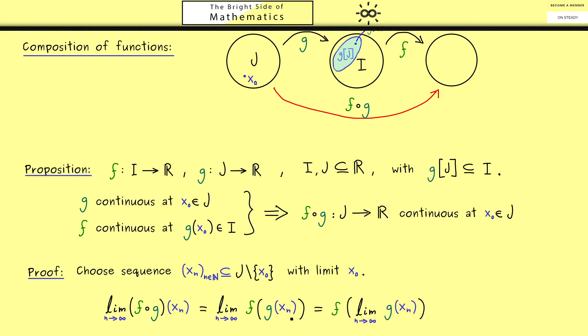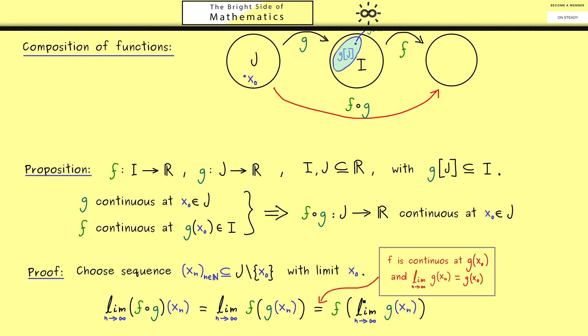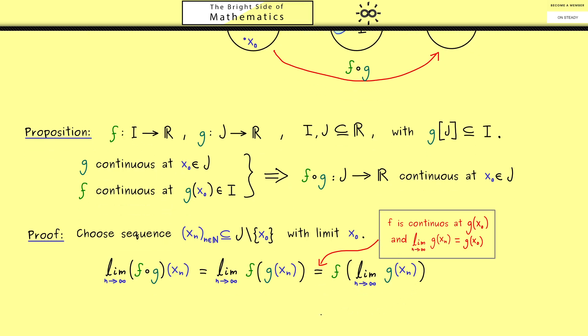And now we use the continuity of f, which means we can pull in the limit. Of course we only know that f is continuous at g of x₀, but this is exactly the point we put in here. This is immediately given because g is continuous at x₀, so we can pull in the limit here as well. So in the end we get f of g of x₀.